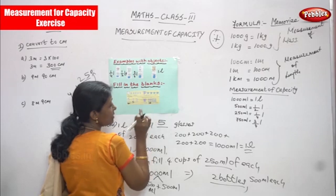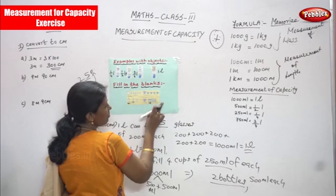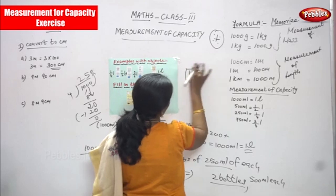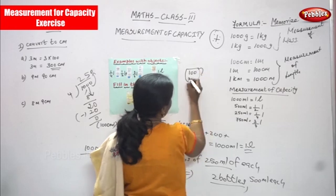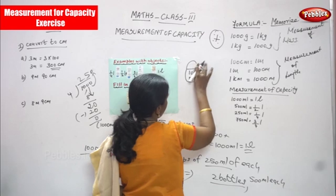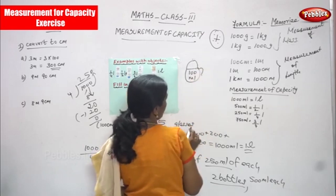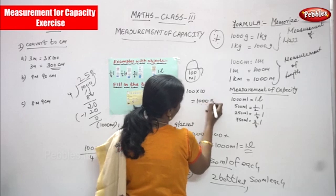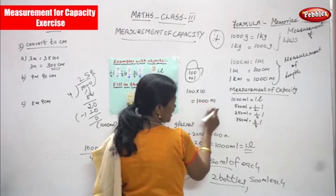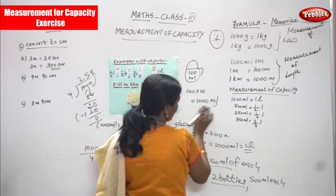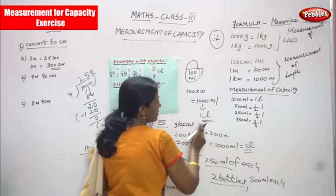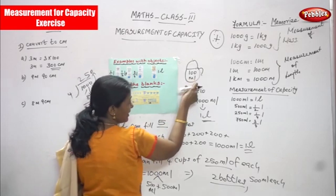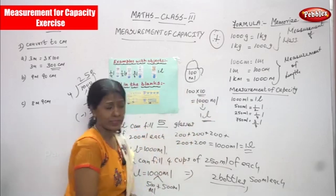So 1 liter can fill 10 mugs of 100 ml. Each mug is 100 ml — 100 into 10 you can get 1000 ml. 1000 ml is nothing but 1 liter. So the answer is 10 mugs, and each mug has 100 ml of water and milk content. 10 mugs is the right answer for the question.